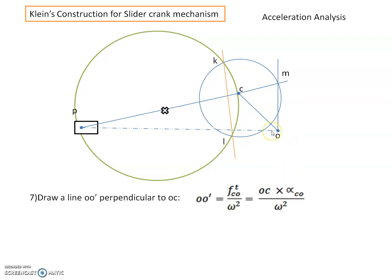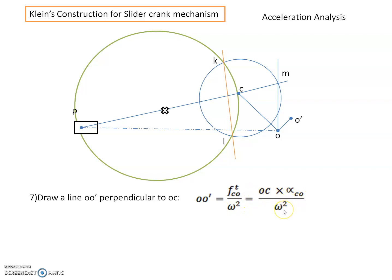Since the crank rotates with non-uniform speed, it will have angular acceleration alpha, so it will have a tangential component perpendicular to link OC, which is the radius of rotation of C relative to O. We draw a line OO' perpendicular to CO. The magnitude of this vector is given by: length OO' = F_T(CO) divided by omega squared, which equals OC multiplied by alpha(CO) divided by omega squared.